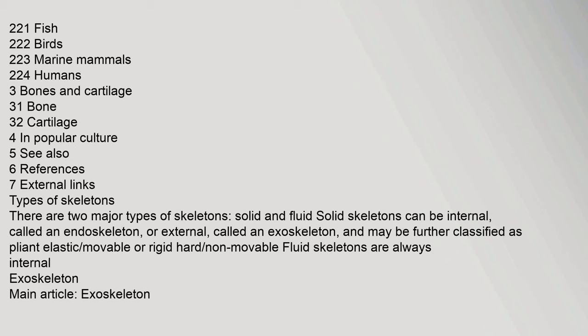There are two major types of skeletons: solid and fluid. Solid skeletons can be internal, called an endoskeleton, or external, called an exoskeleton, and may be further classified as pliant (elastic, movable) or rigid (hard, non-movable). Fluid skeletons are always internal.